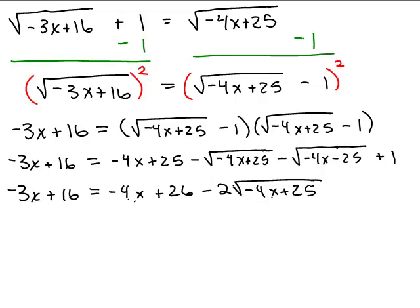All right, so I've simplified the right-hand side. Now I just want to isolate this square root, right? This term, this negative 2 square roots of negative 4X plus 25. So I've got to add 4X minus 26 to both sides.